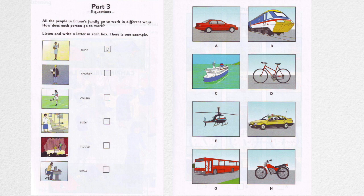My cousin is a footballer. Wow. Which team does he play for? I don't know. I think football's boring. But I know it's a famous one. He just bought a helicopter and he uses it to go to all the matches. He's very rich. My brother's an engineer. Have you met him yet? No. Where does he work? He's working on an island this month. You can only get there by boat, so it's exciting for him to go there every day. I think he wants to work there in the future, too, if he can.